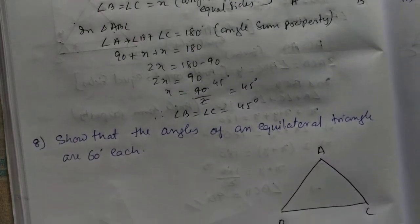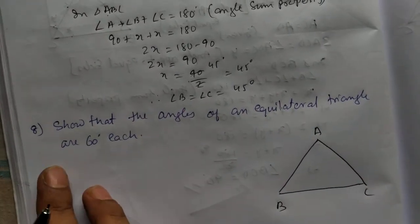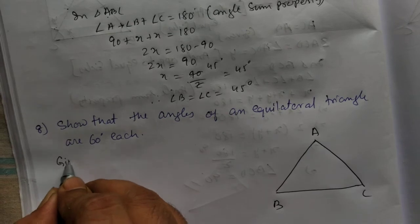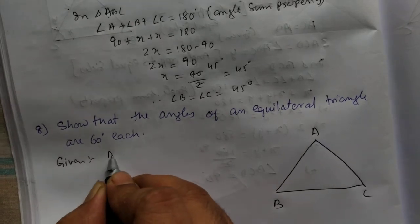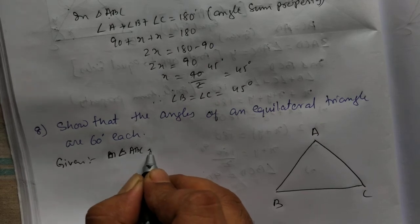Let's go to question number 8. Show that the sum of the angle of equilateral triangle is 60 degree. So given, it's an equilateral triangle means triangle ABC is equilateral.